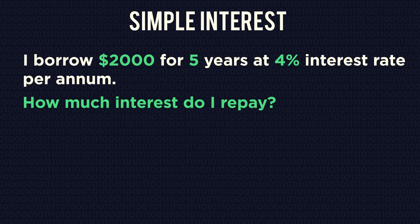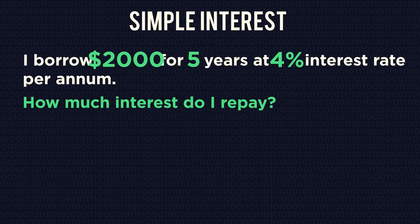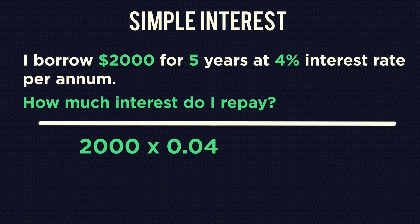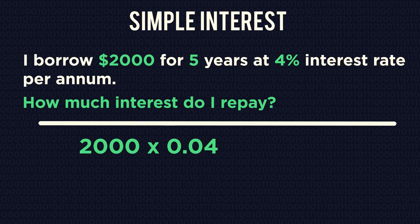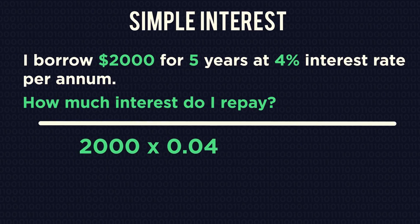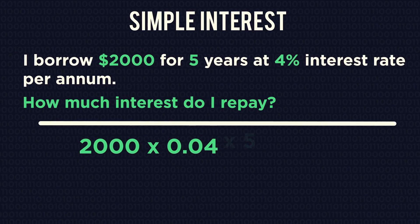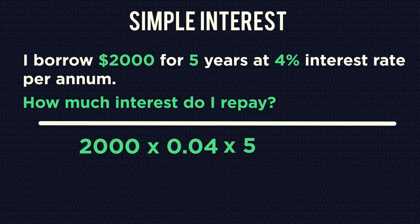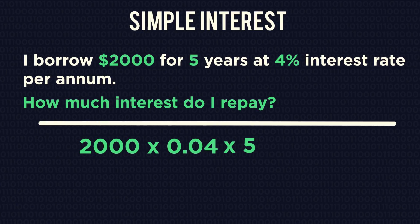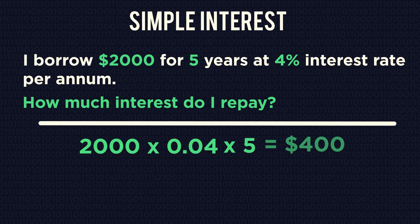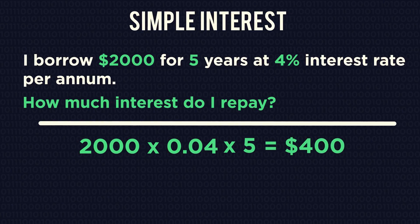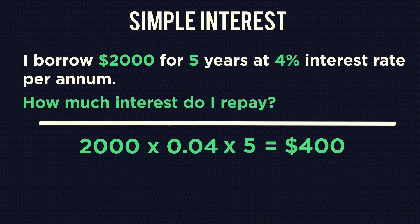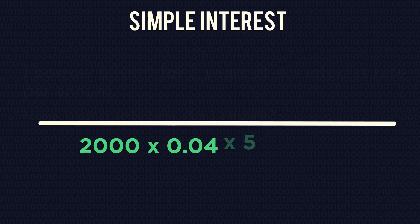Simply multiply the numbers together. The interest I have to pay is 4% of 2000, paid five times. So after five years, I have paid 400 pounds of simple interest on the money I loaned.